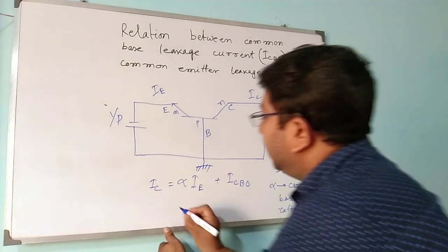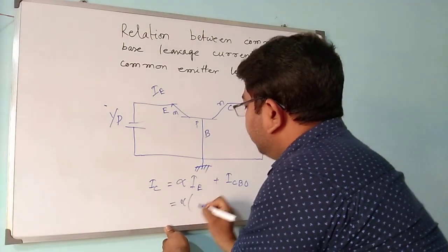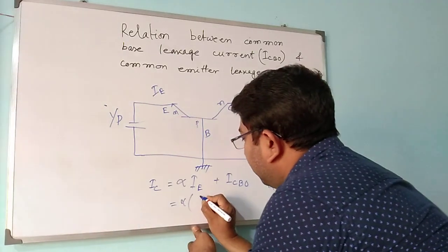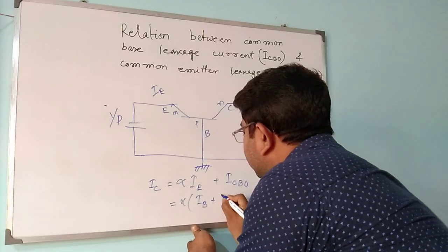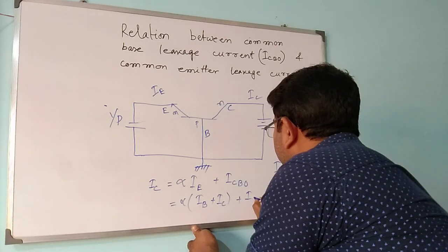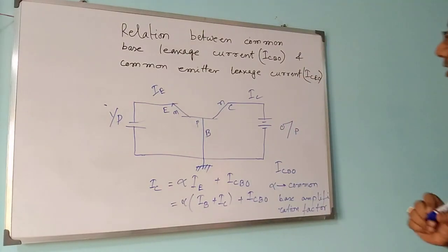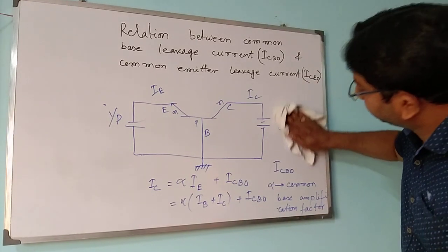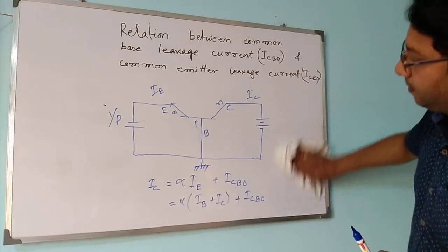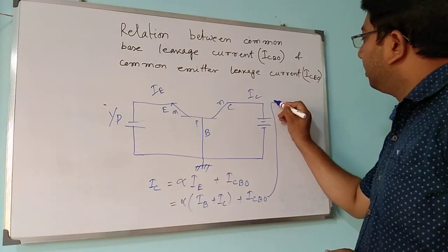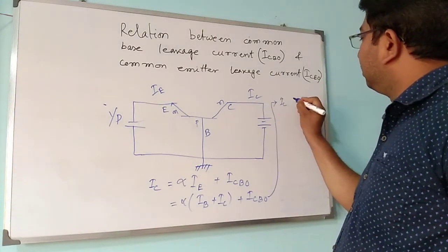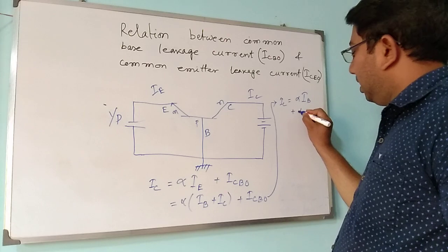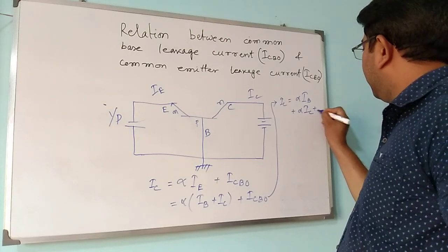From there I can write: α into IE — the emitter current is the summation of your base current IB plus collector current IC. Substituting, I can write IC equals to α·IB plus α·IC plus ICBO.